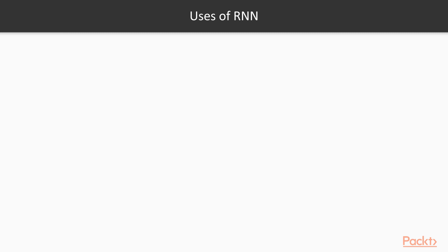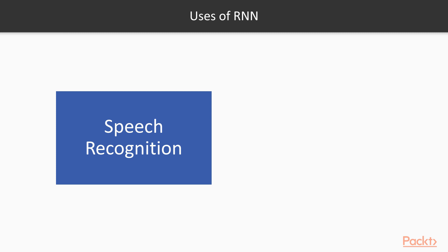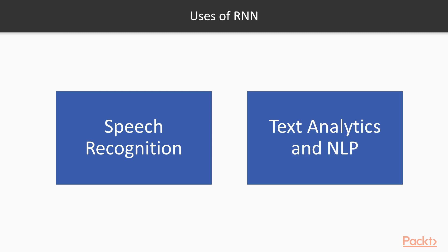Where are RNNs applied? Speech recognition is the most common area, since it requires processing a sequence. Any other requirement needing sequence — like time series data — is also where RNNs are used, as well as text analytics and NLP or natural language processing. Speech recognition itself works by converting speech to text, analyzing it with NLP, and converting it back to speech. We will look at examples of text classification and time series analysis in the form of code demos.